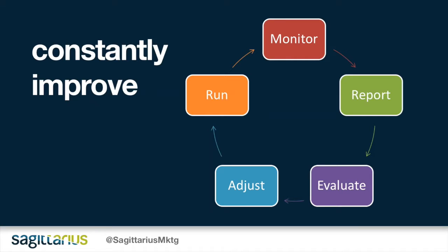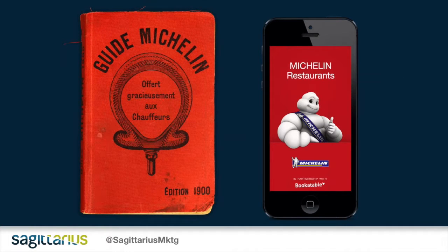Once goals have been established and implemented, it's important to continue to monitor, report, evaluate, adjust and run again. This is how you can optimise effectively. It's not a one-step process — you have to continually monitor, update and listen to your traffic. In today's digital sphere, you need to evolve to survive. Look at how you can bring your product into the market in a different or multi-channel way, because no one wants to be the next HMV or Woolworths. In 1900, the Michelin Brothers published their first guide for French motorists — 116 years later, that guide is now an online app and a world-renowned measurement for top restaurants.